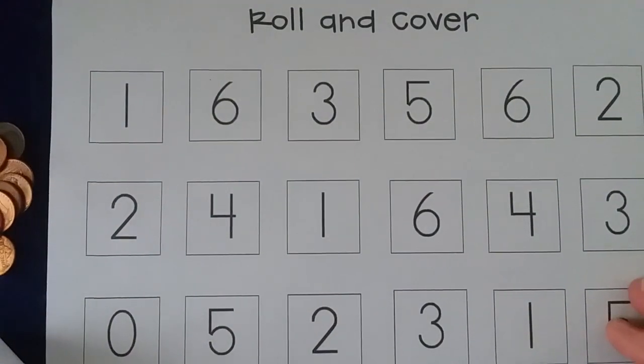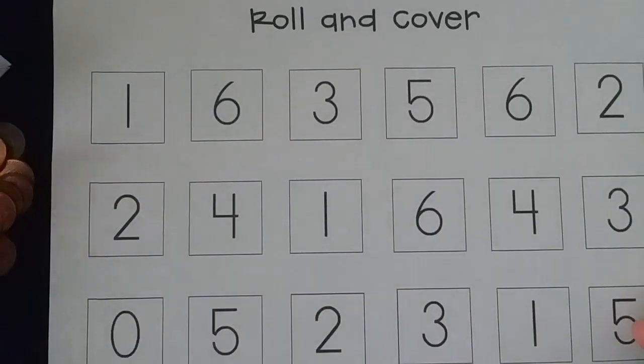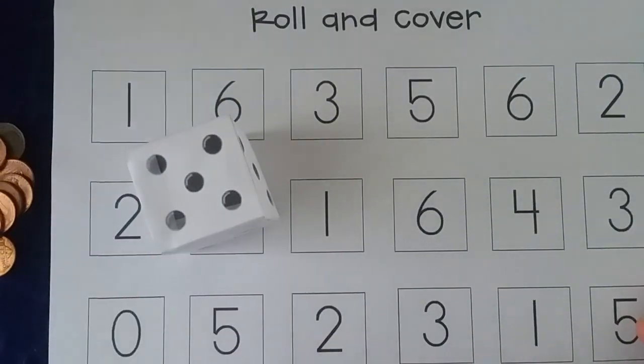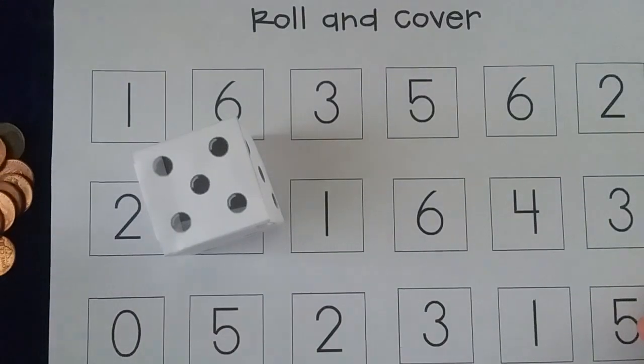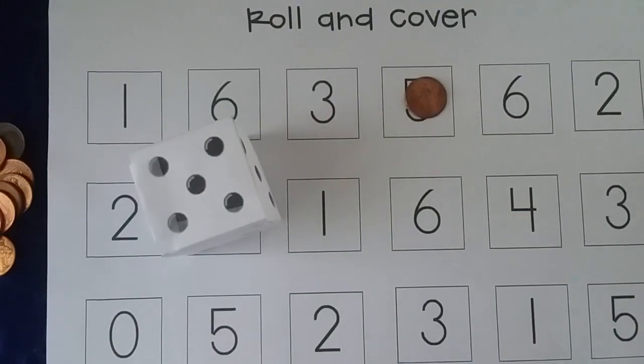So what happens is your child will roll the die and then whatever amount lands on top is the number they're gonna cover. So I know that that is five and so I'm gonna put my counter on the number five.